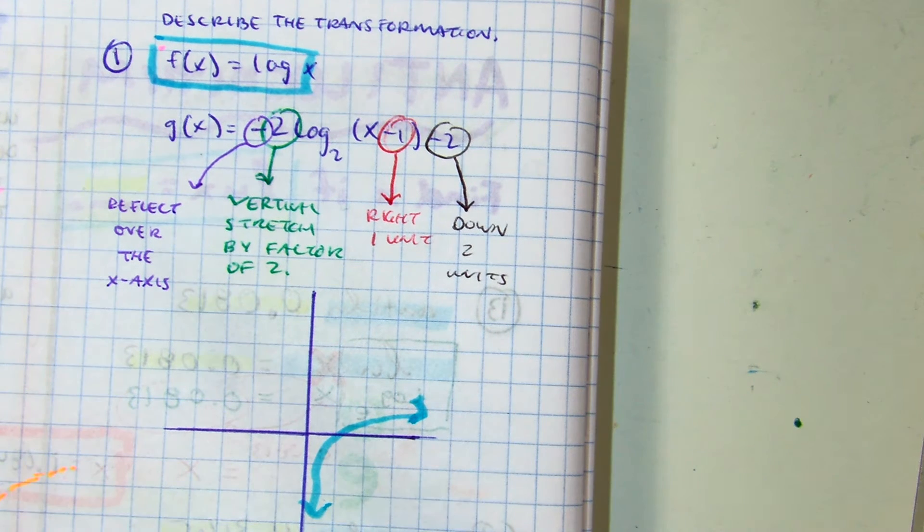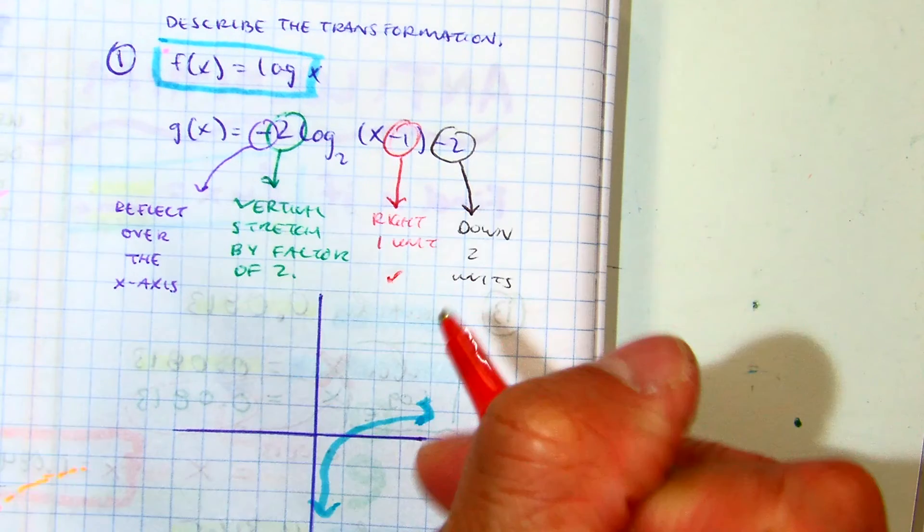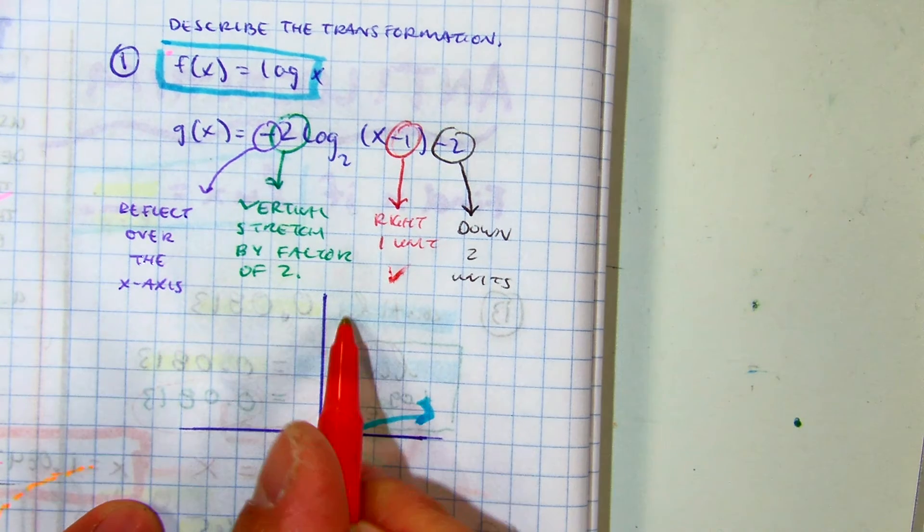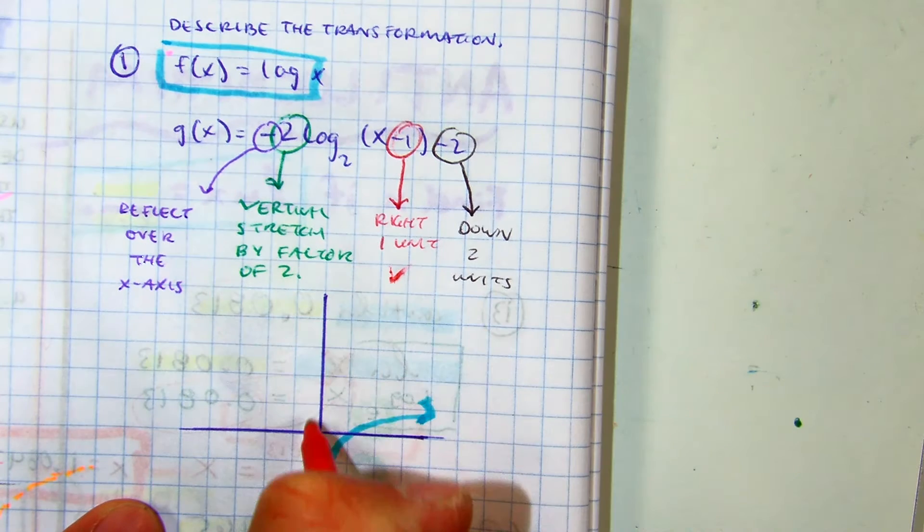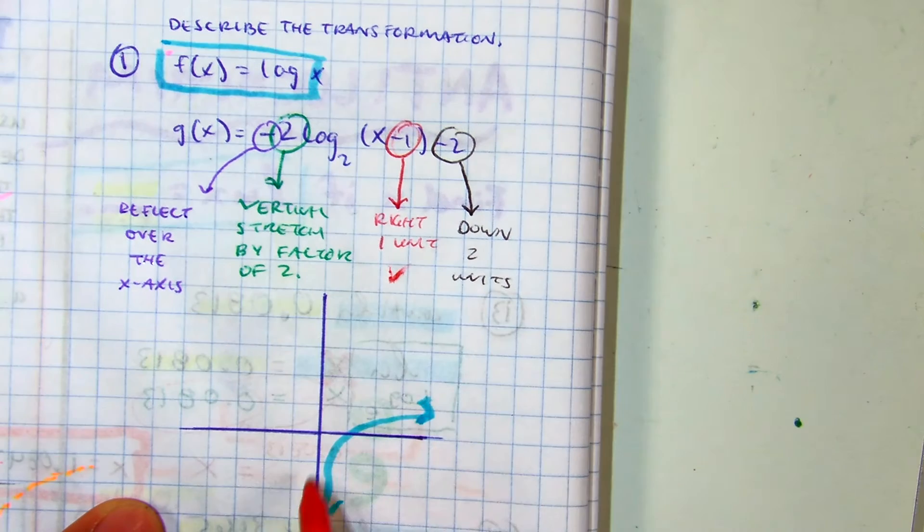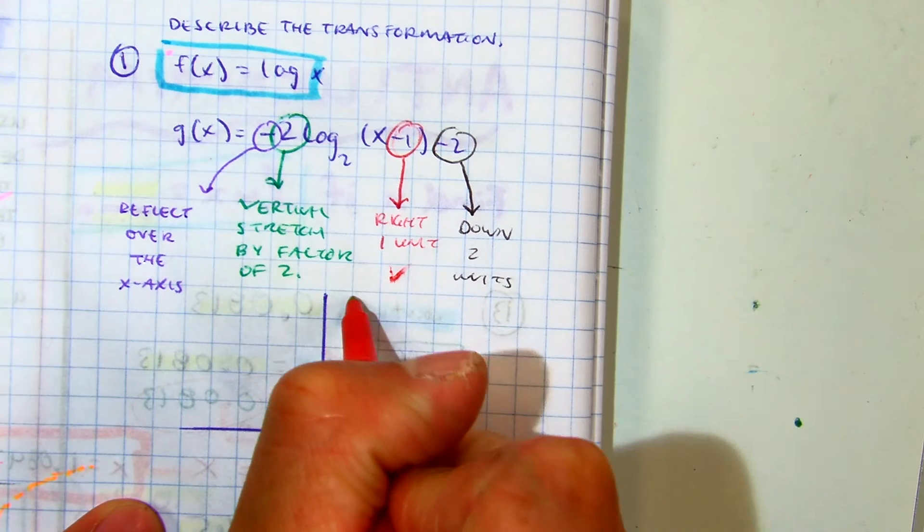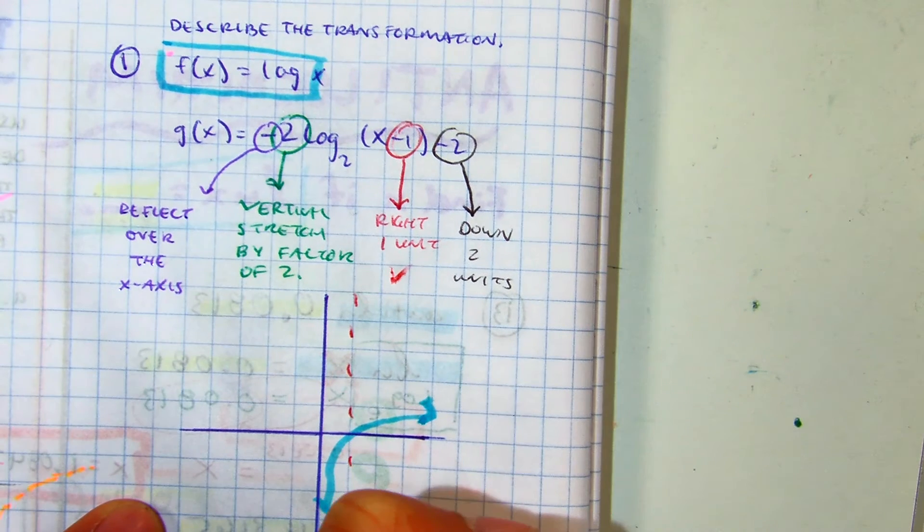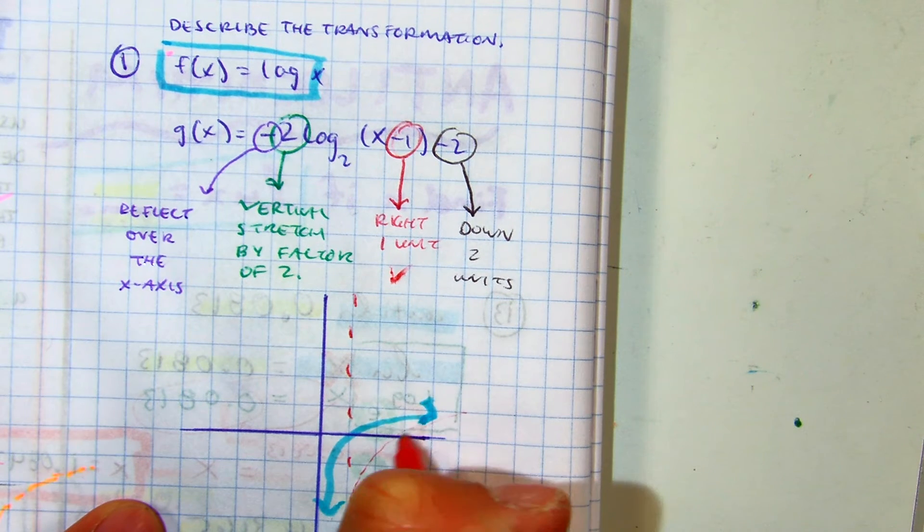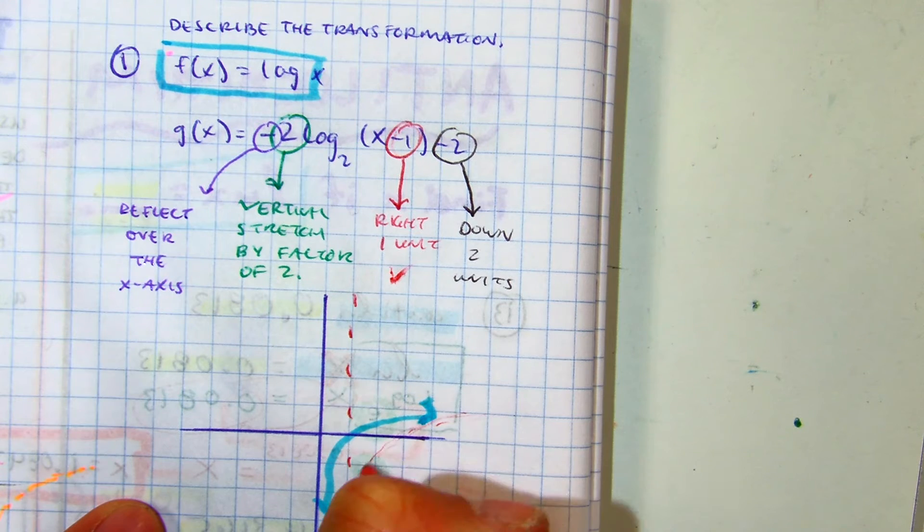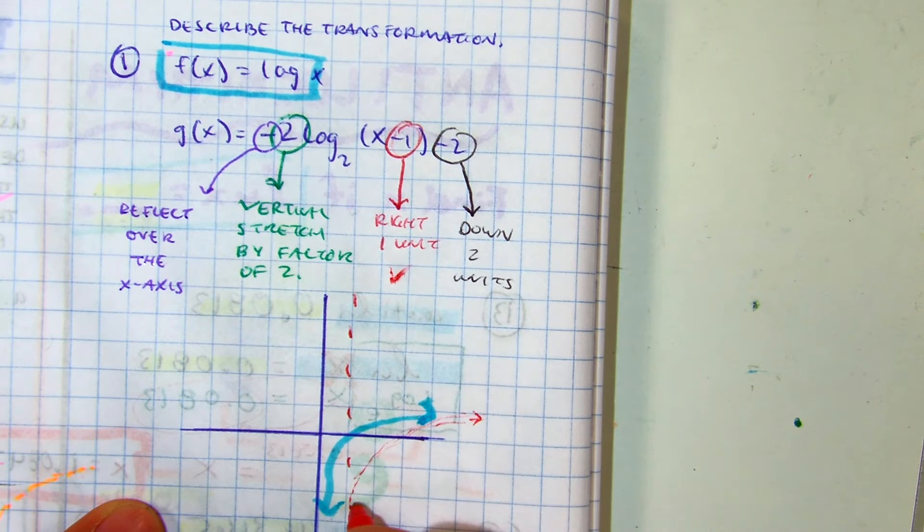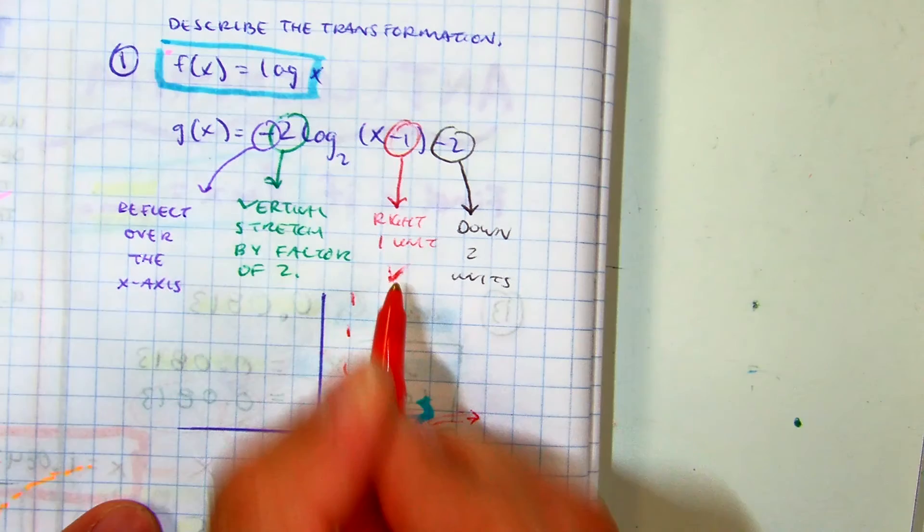I'm going to move it right one unit. So this is... we talked about how the y-axis is your asymptote. So if you move this over, and I'm trying to draw really faint graphs because I'm just trying to show what's happening each time. So that is the going right.